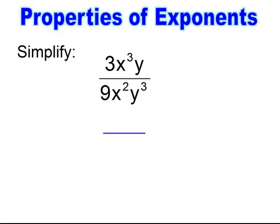I write my line and simplify the 3 over 9, which reduces to 1 third. Then x to the 3rd over x squared — the higher exponent is on top, I subtract and it stays up top, so I get x. Then y over y to the 3rd — I subtract and it stays on the bottom as y squared. You end up getting x over 3y squared.